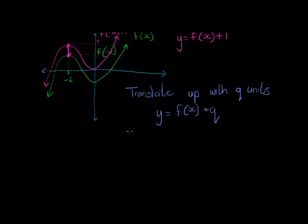But if I were to go translating down with q units, then obviously I'm just gonna subtract q each time. So this time it would still be the same function f(x), but this time I'm going to subtract q units. So that's easy enough.